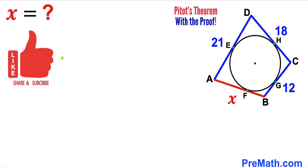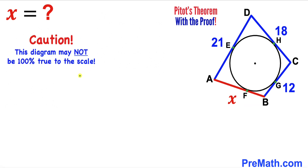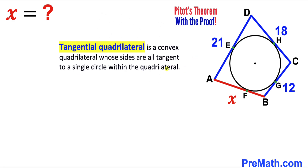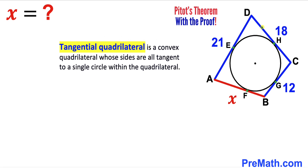Please don't forget to give a thumbs up and subscribe, and keep in mind that this figure may not be 100% true to scale. Let's get started. This quadrilateral ABCD is called a tangential quadrilateral, defined as a convex quadrilateral whose sides are all tangent to a single circle inside it, as you can see in the diagram.